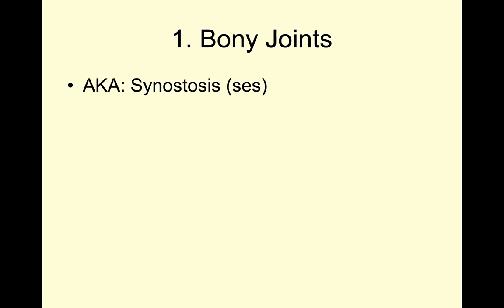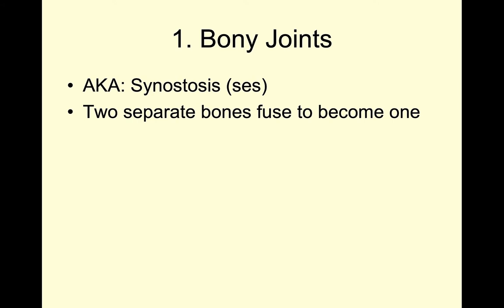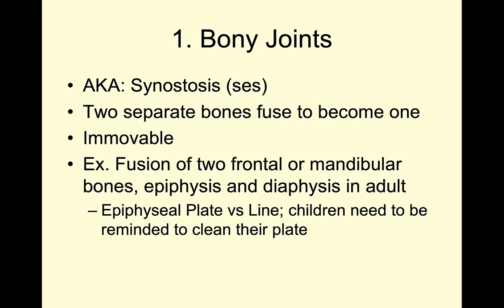We'll start with bony joints. Another term for these is synostosis — synostoses in the plural. This is where we have two separate bones that fuse to become one bone, so they are immobile. If you remember from our previous lecture going over our skull, we learned about our frontal bones, our mandibular bone, and our maxilla bones. These bones are fusing — there are two of them and they fuse together.